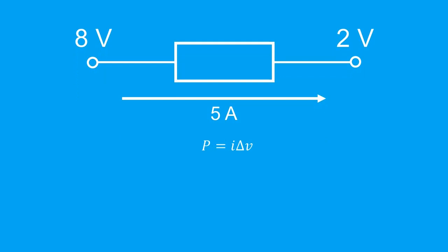So to find power, we use the formula P equals I delta V. We know that I is 5, and we have to find delta V.